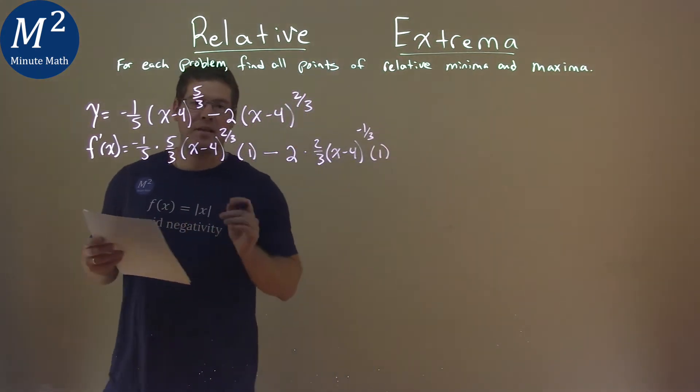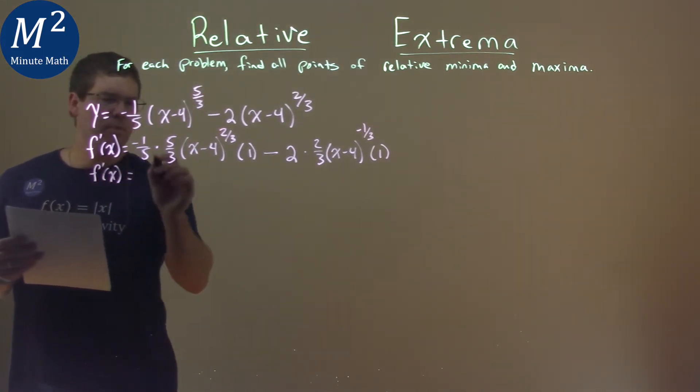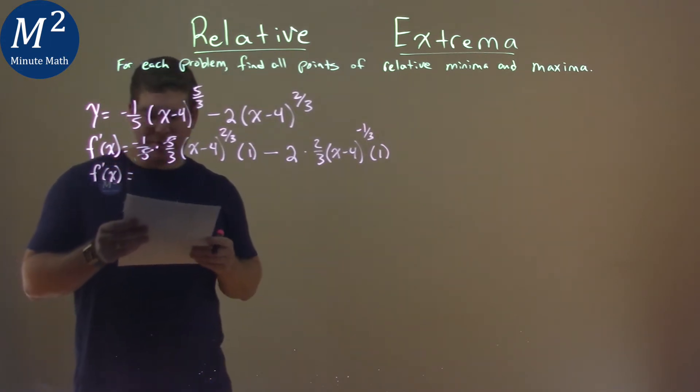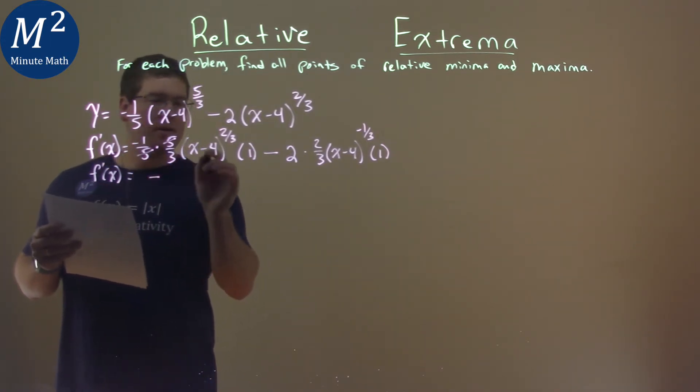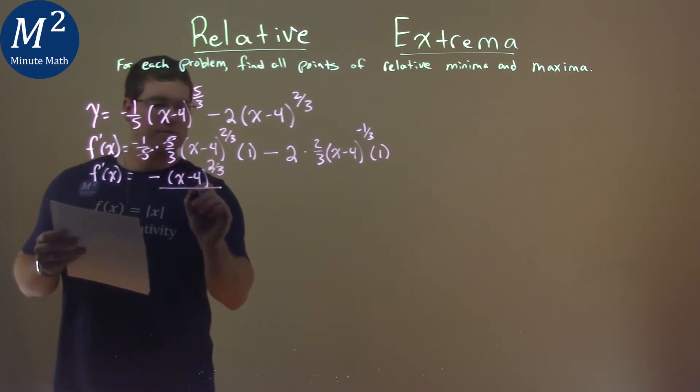All right, so let's go clean this up. F prime of x here. Well, fives cancel. That's lovely. We have a negative up top, and that's negative one. So, we have a negative negative, and we have the x minus four to the two-thirds power left over. That's two-thirds, not three-halves, two-thirds power over our denominator, which is just three.